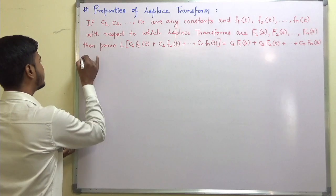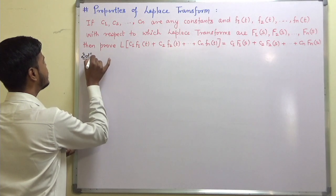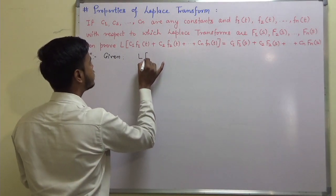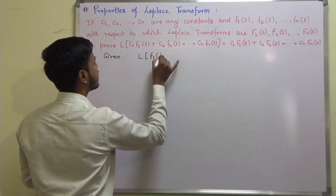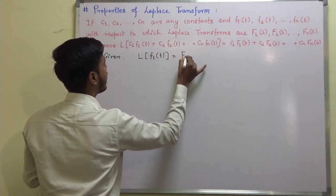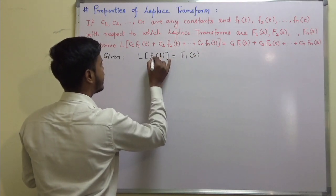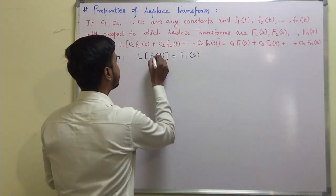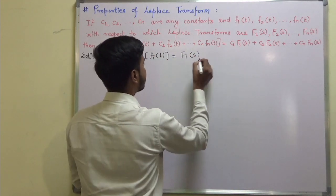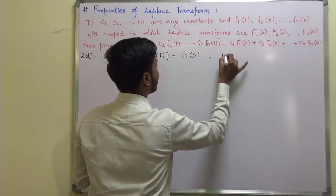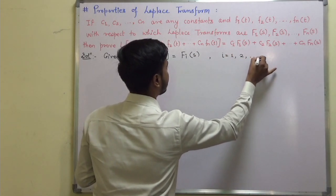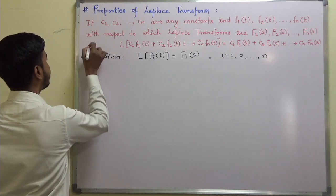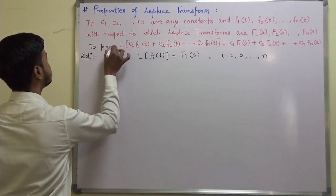Let us start with what is given to us. Given that the Laplace transform of fi(t) equals Fi(s), for i = 1, 2, ..., n. Now, we have to prove the linearity result, so we start from the left hand side and try to get the right hand side.